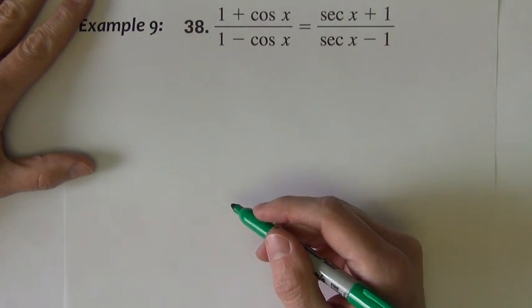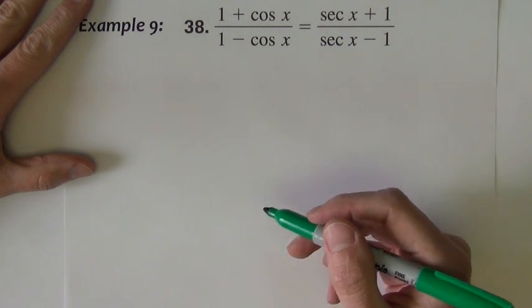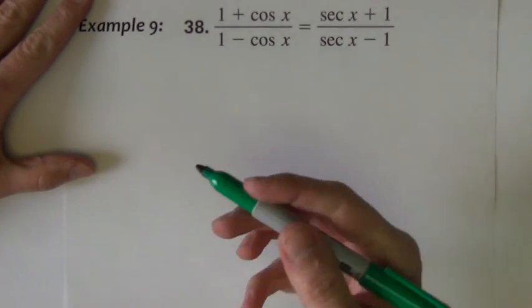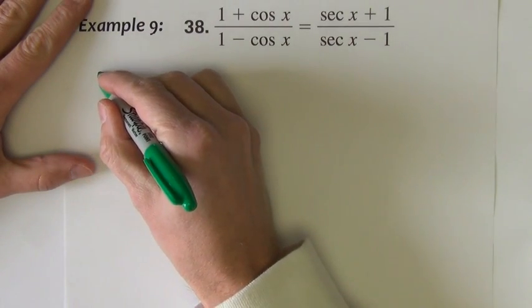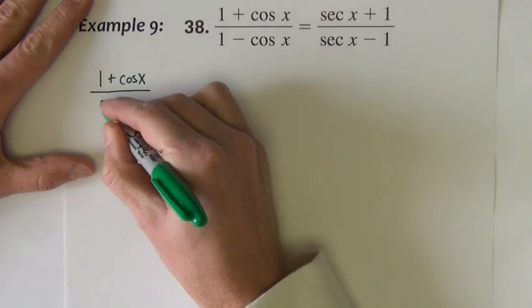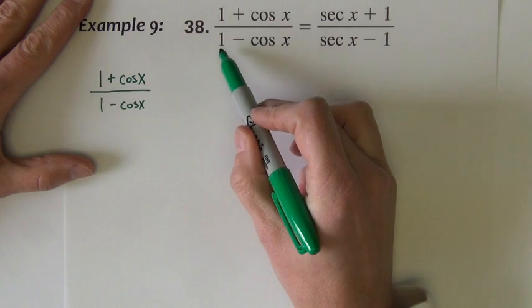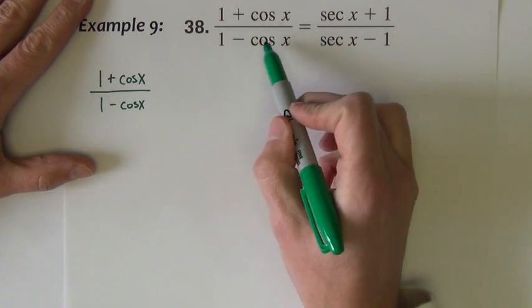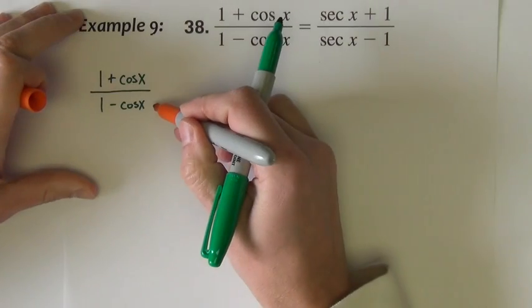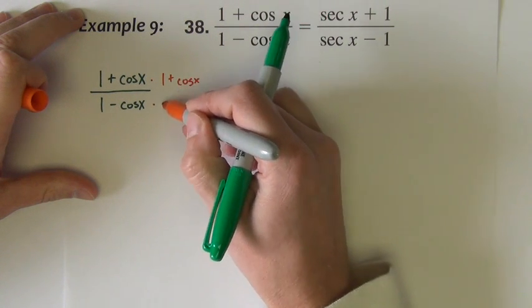Okay, this next example has an appearance that might lead you in the wrong direction. Let me show you what would be the classic way to start this problem. We saw a couple slides ago that if I have a binomial denominator not made up of squares, we might try and rationalize the denominator. I might try and multiply top and bottom by 1 plus cosine x.